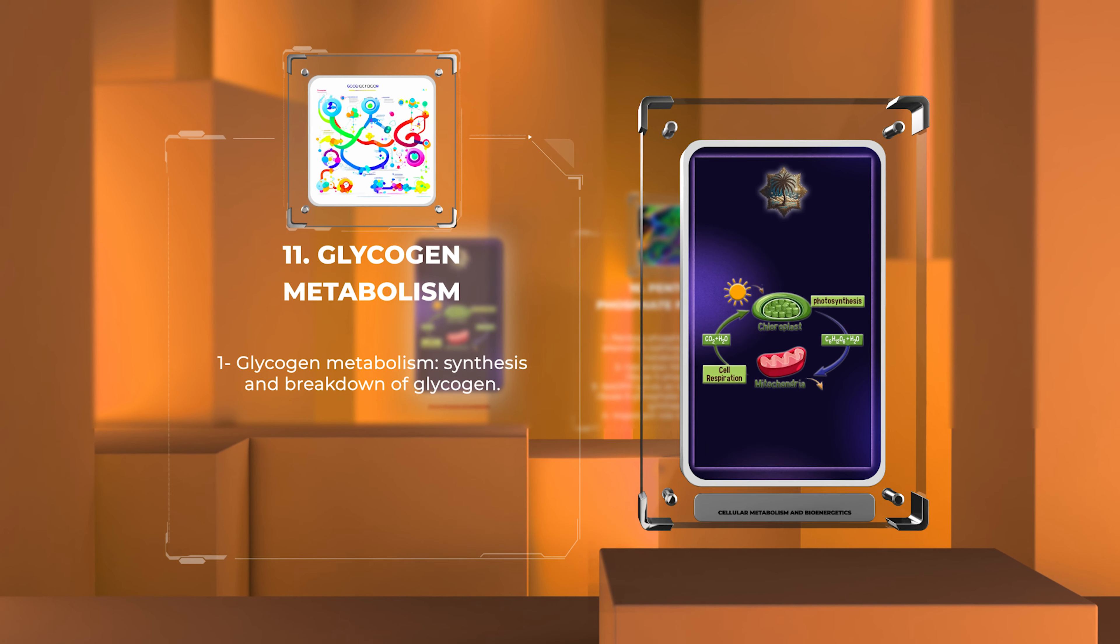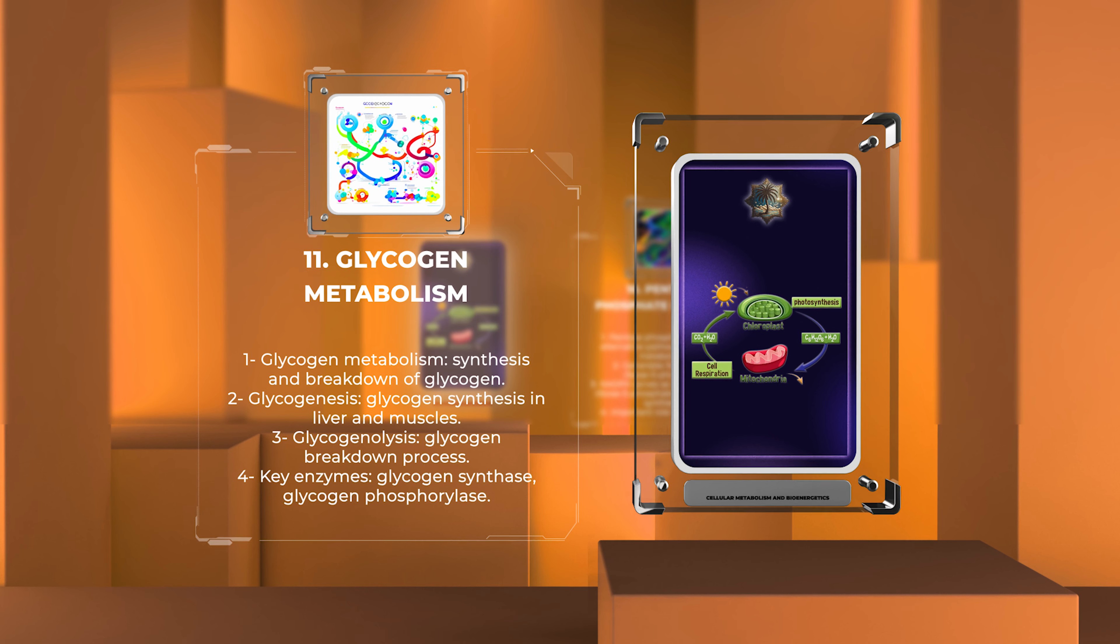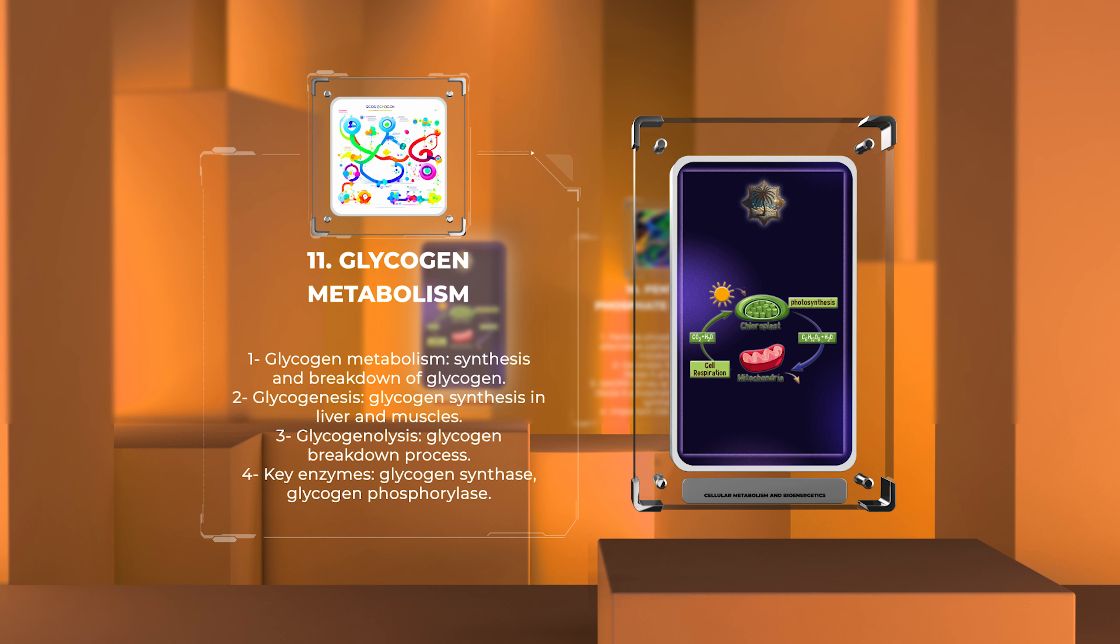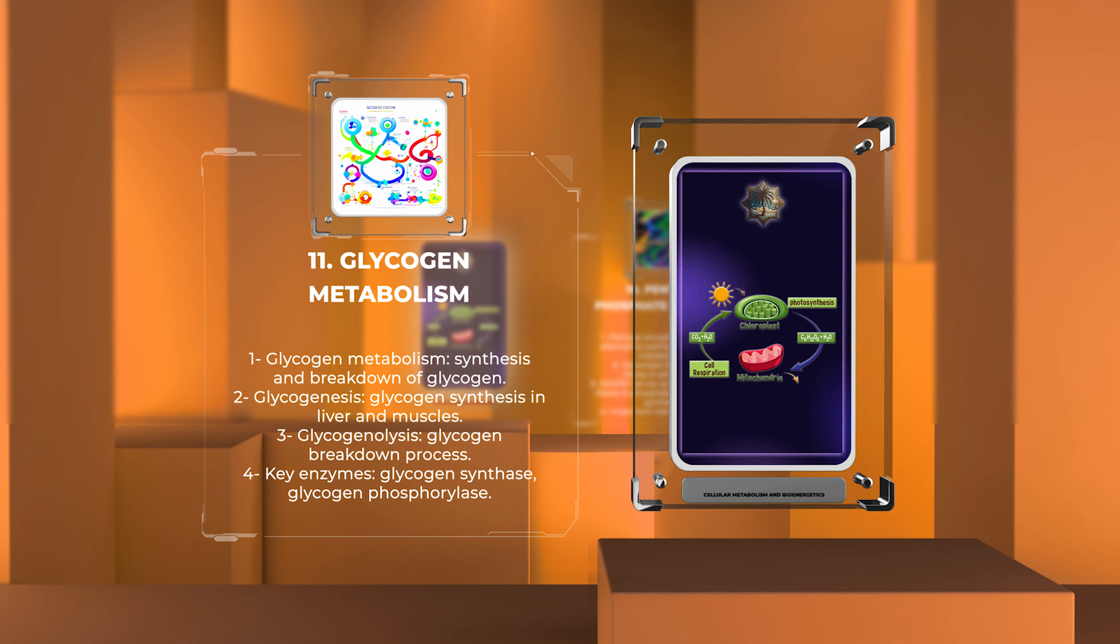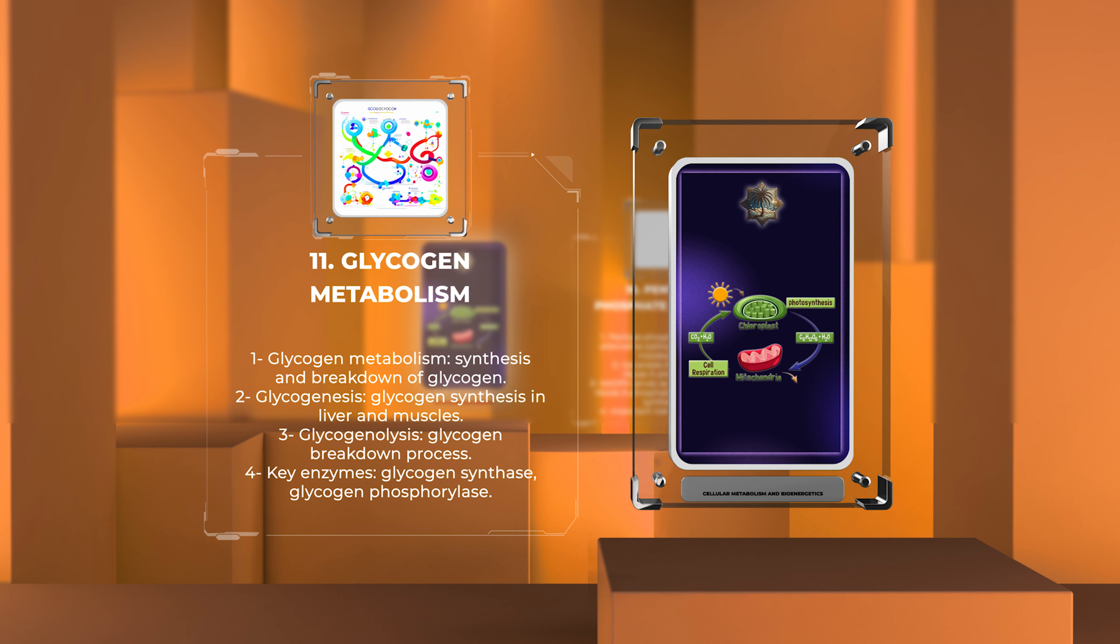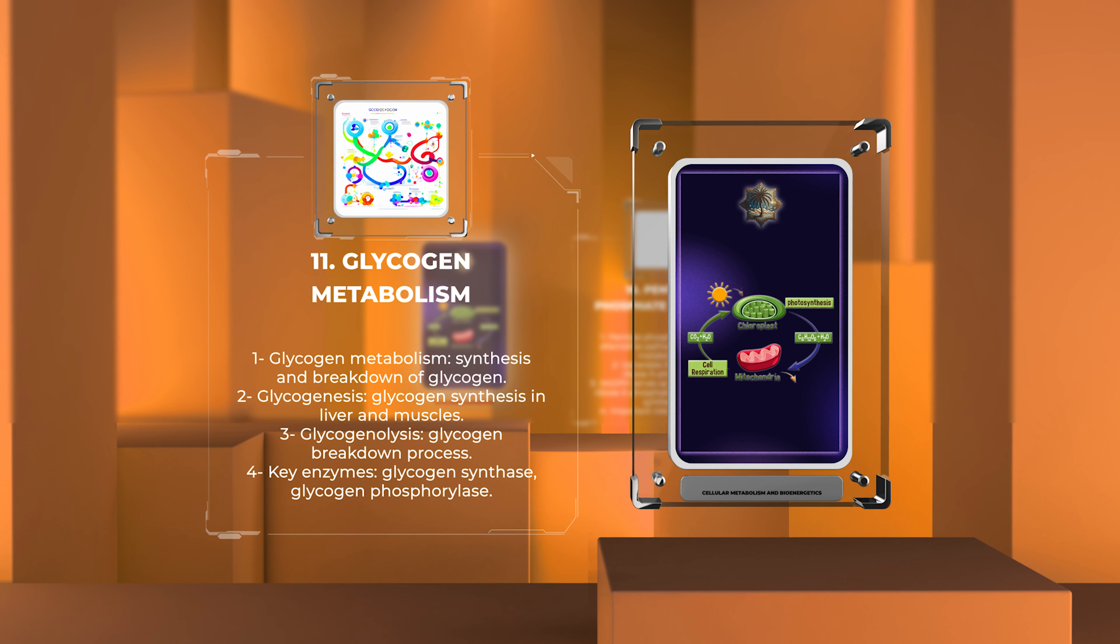Glycogen metabolism involves the synthesis and breakdown of glycogen, a branched polymer of glucose. It serves as a readily available energy storage molecule in animals. Glycogen synthesis occurs through glycogenesis, primarily in the liver and muscles, while glycogenolysis is the breakdown process. Key enzymes such as glycogen synthase and glycogen phosphorylase regulate these processes.